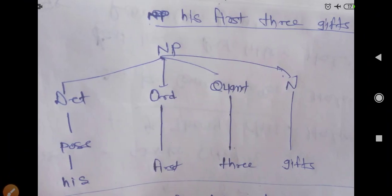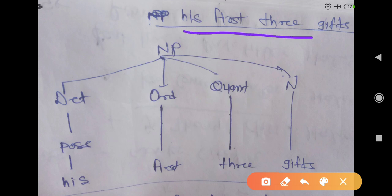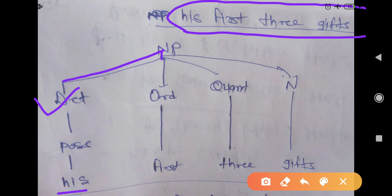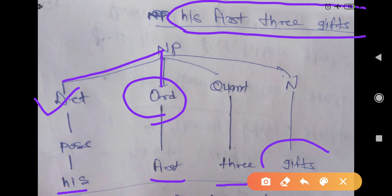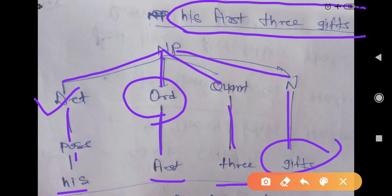Next, the example is: 'his first three gifts.' When you are asked to segregate and identify the constituents, first you see 'his' — 'his' is a determiner, that's a possessive. You can make a tree diagram accordingly. 'First' is used as an ordinal, 'three' is a quantifier, and 'gifts' is the noun. This way you can make your tree diagram.